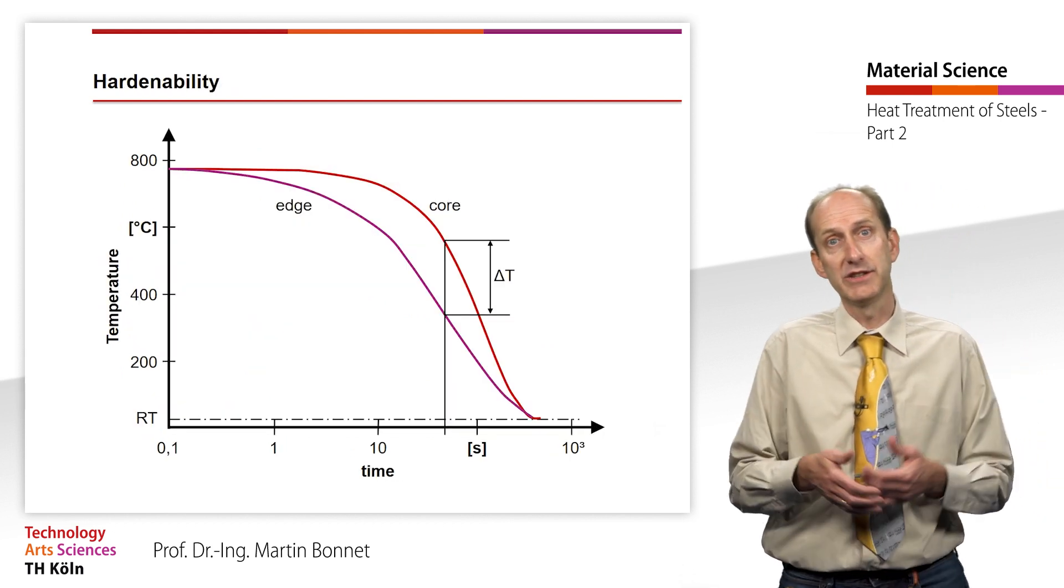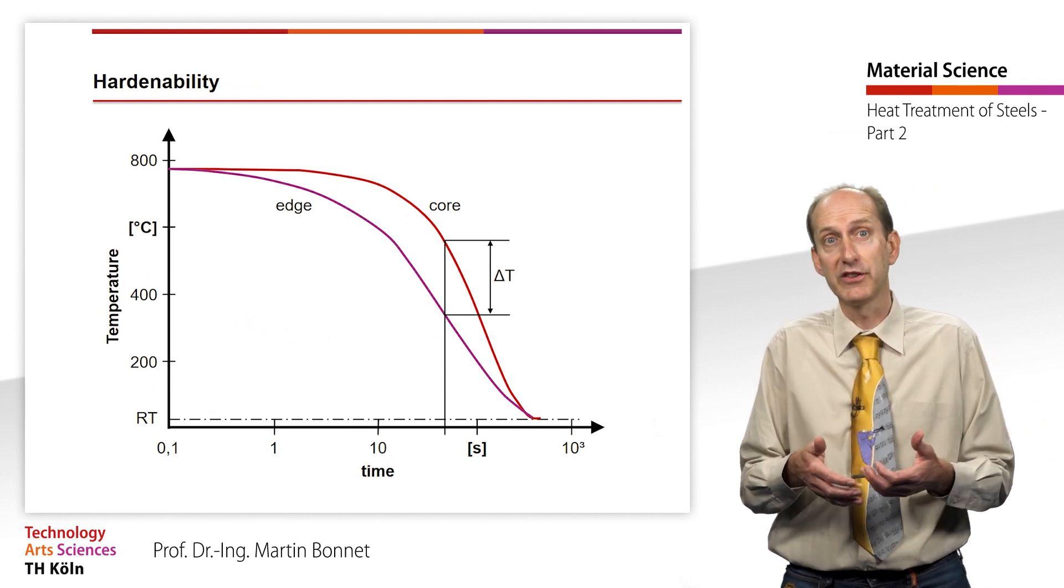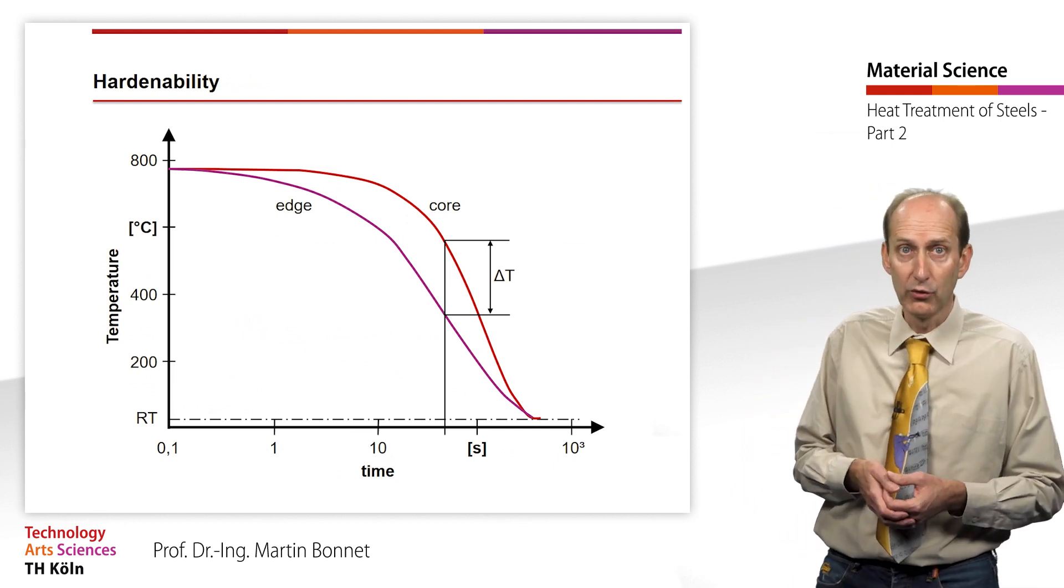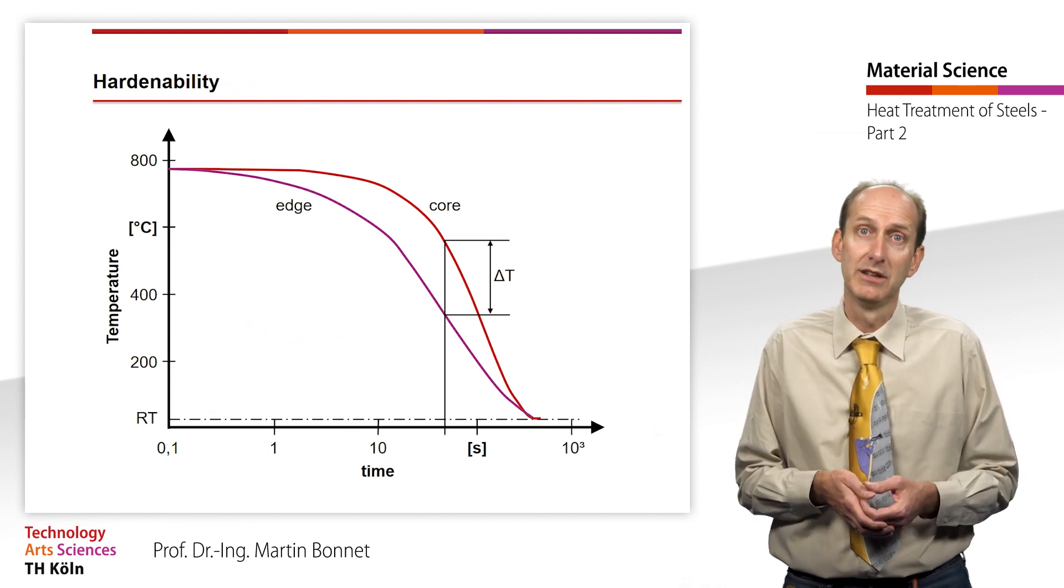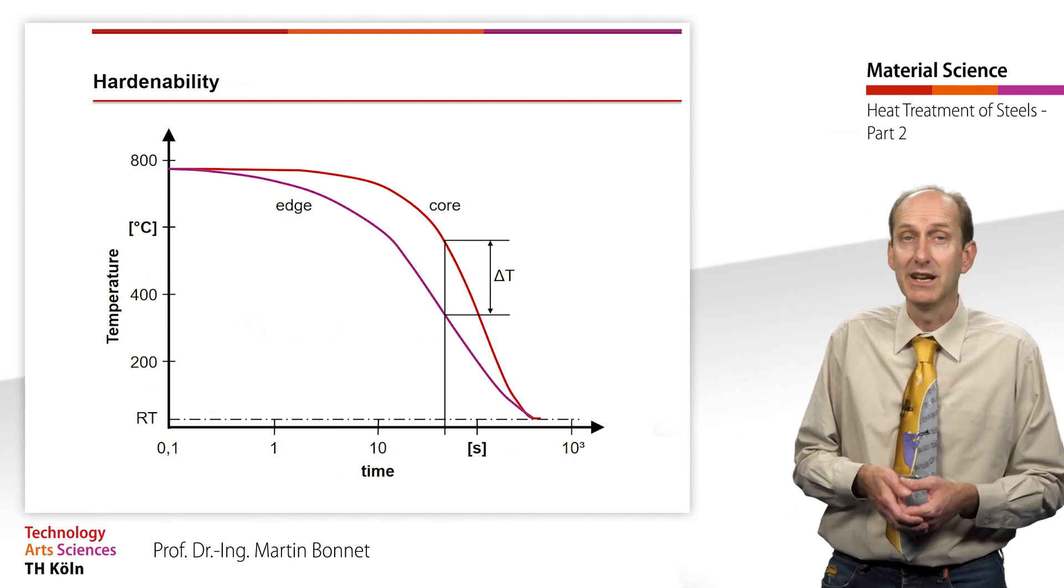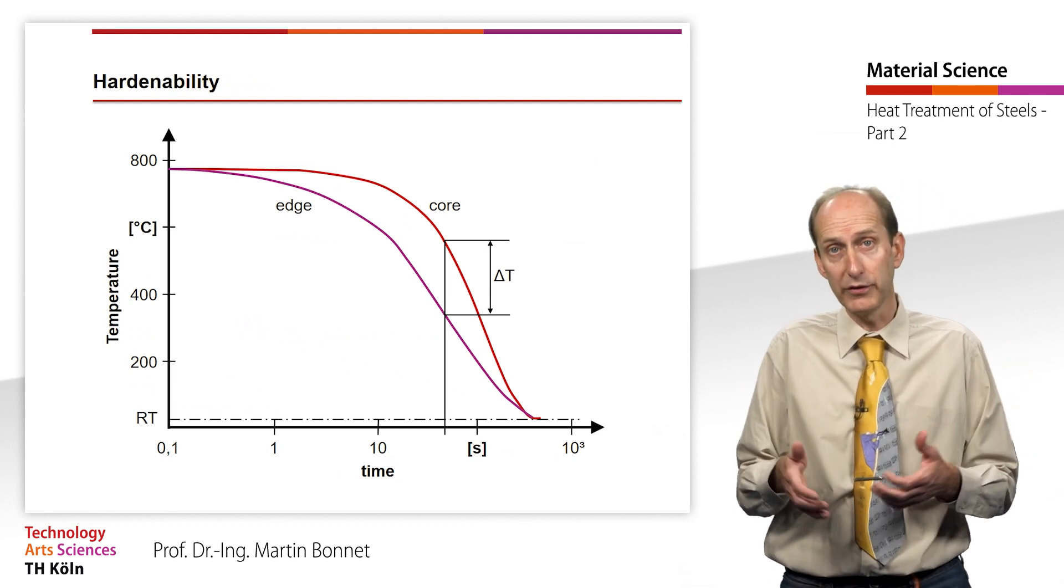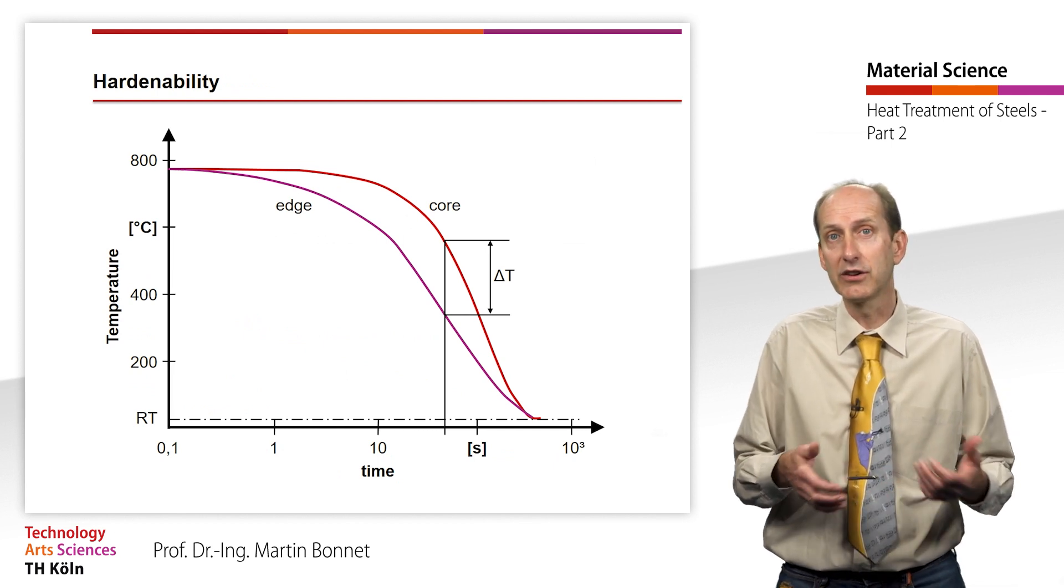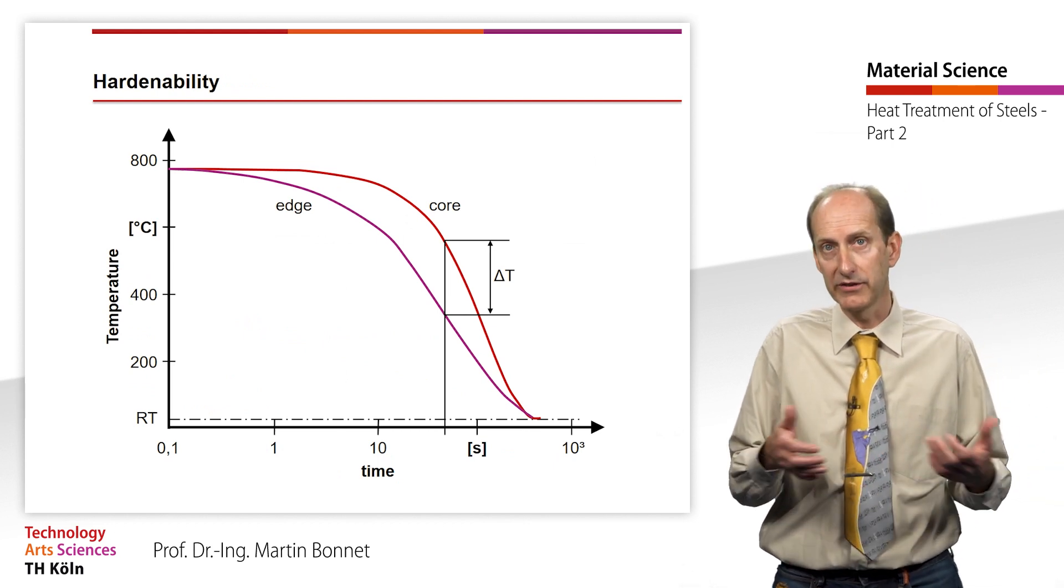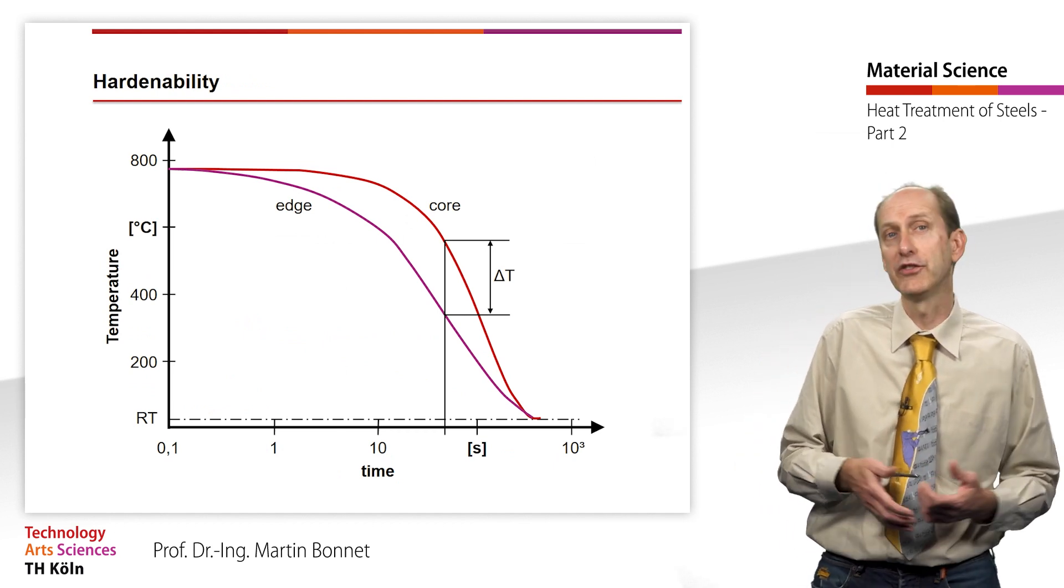When quenching larger cross-sections, the limited thermal conductivity of the steel leads to temperature differences between the core and the edge of the sample. It follows that during cooling, the core has a higher temperature than the edge and the core reaches the important temperature of the pearlite region later than the edge. If the critical cooling rate is just reached in the surface layer, it is increasingly undercut towards the core. As a result, unalloyed steel only achieves a martensitic layer with high hardness on the surface. We then speak of surface hardening steel.